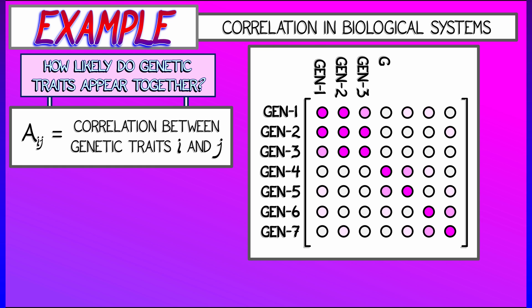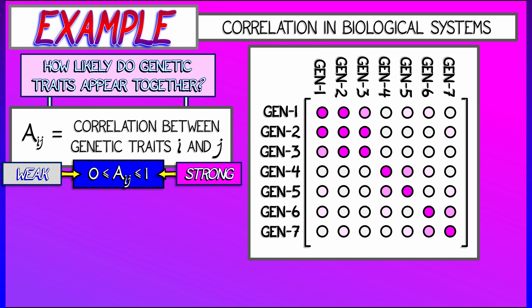Here's a simple example with seven genetic traits, and the entries of this 7x7 matrix tell you how strongly correlated trait i and trait j are.